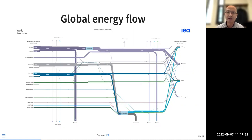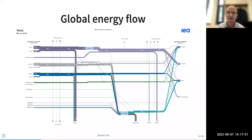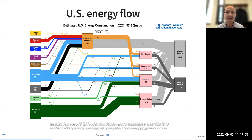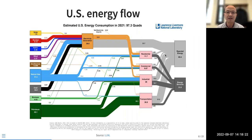Pay attention to units: the global energy flow uses million tons of oil equivalent, sometimes exajoules. The US chart uses quads and other energy units. The US flow shows more clearly the central role of electricity generation, and the gray flows represent rejected or wasted energy — energy losses and efficiency losses — with electricity generation being a big portion of that waste.